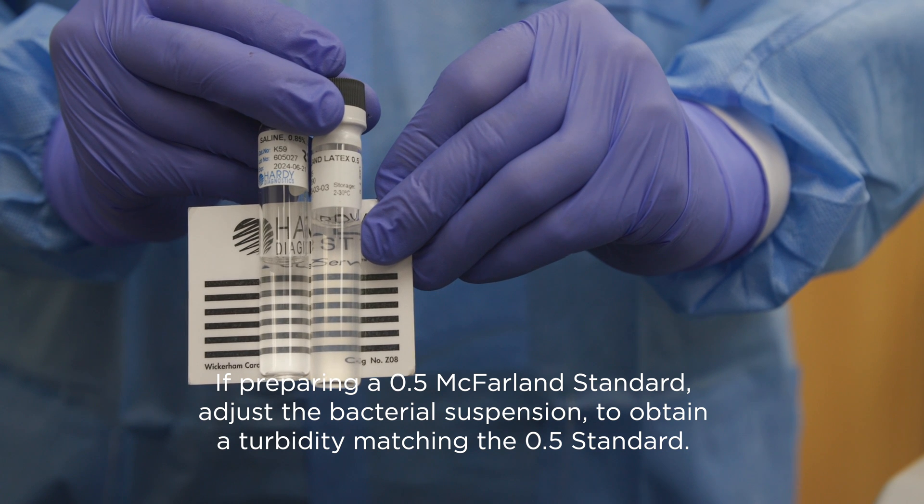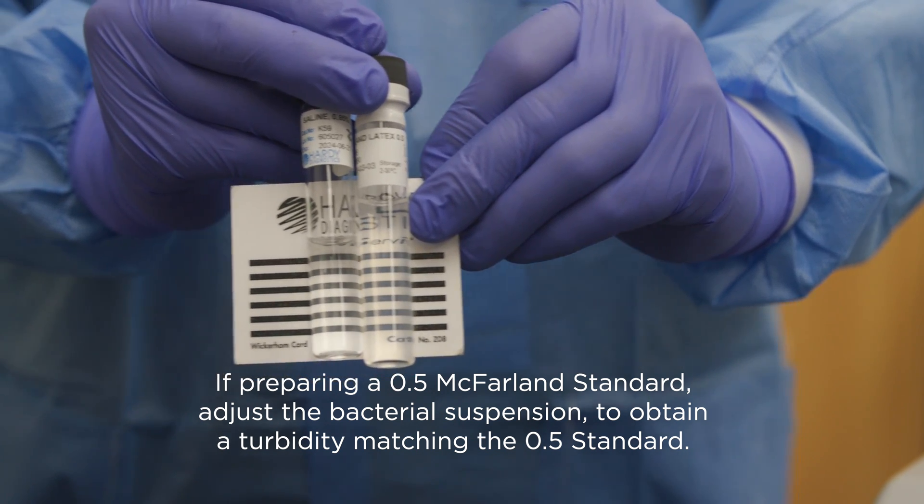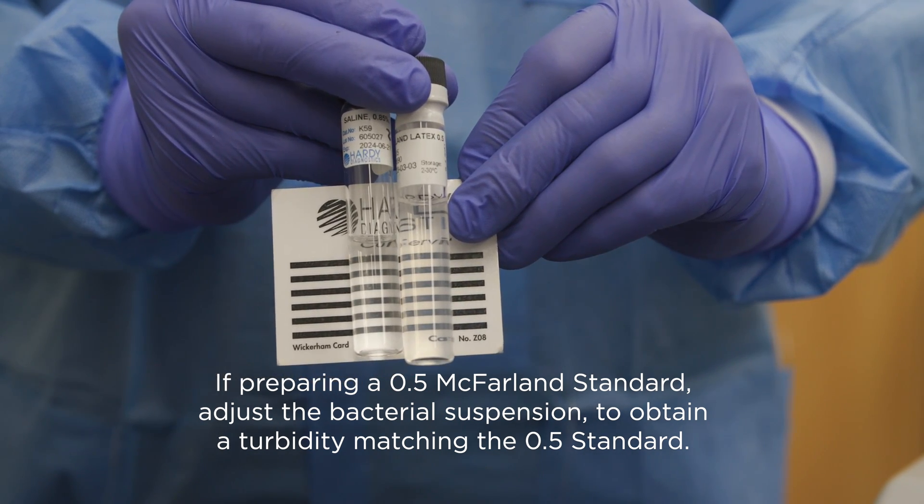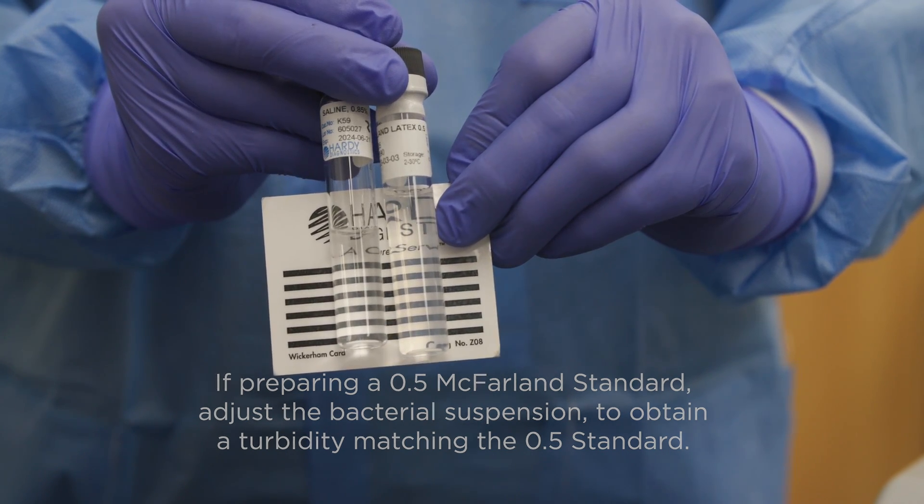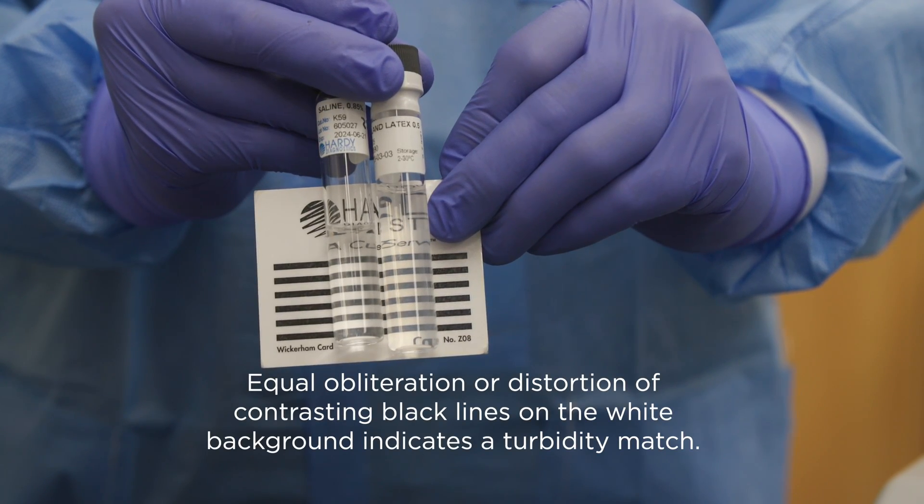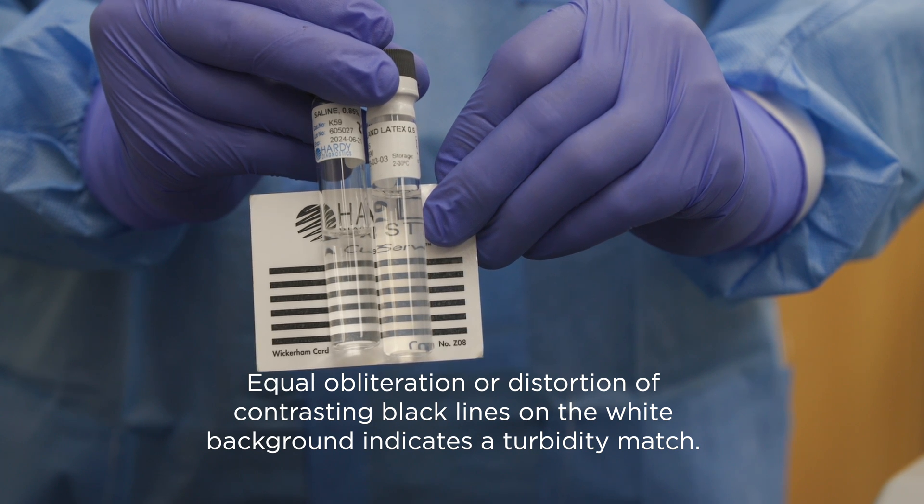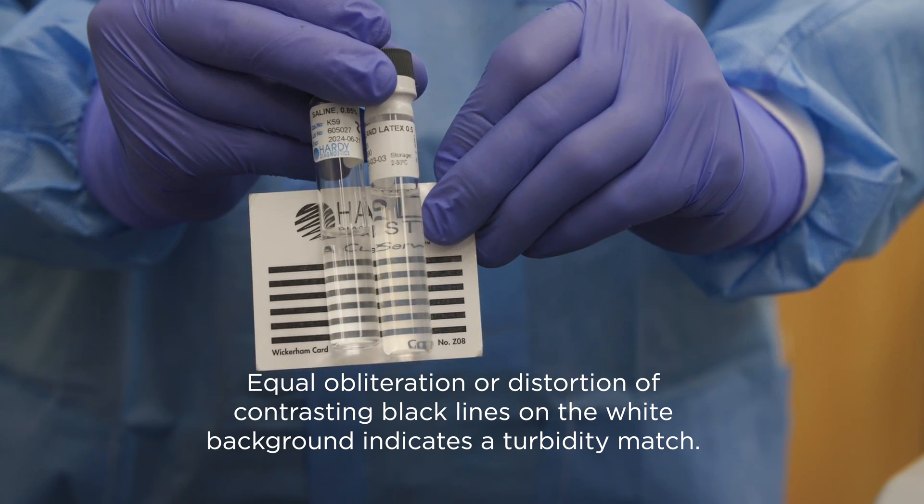If preparing a 0.5 McFarland standard, adjust the bacterial suspension to obtain a turbidity matching the 0.5 McFarland standard. Equal obliteration or distortion of contrasting black lines on the white background indicates a turbidity match.